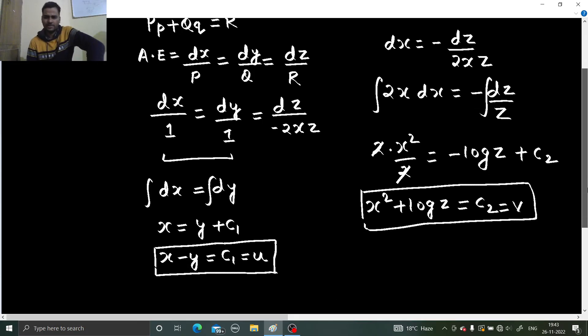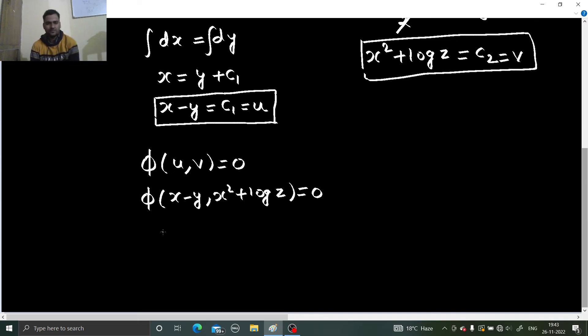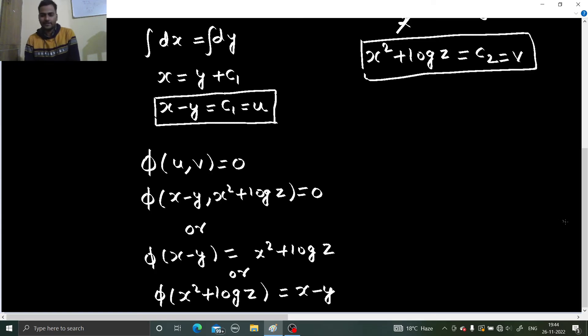Things are over because finally we have to write as phi of u, v equals to 0. So there you go. Phi of u and v is your x square plus log z equals to 0. There are other ways to write the same answer also. Phi of first one equals to x square plus log z or someone on any other planet will write this like this: x square plus log z equals to x minus y. Different people, different thinking, different answers.